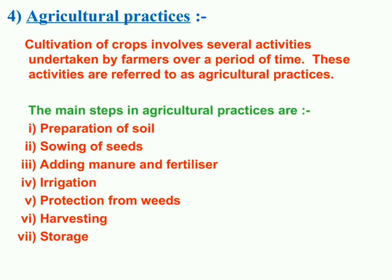Next is agricultural practices, which involves several activities undertaken by farmers over a period of time. First, farmers prepare the soil; then they sow the seeds; after that they add manure and fertilizers; then they provide water to the field; then they remove unwanted plants; after that they harvest the crop by cutting it down; and ultimately they store it. Storage is the last step.